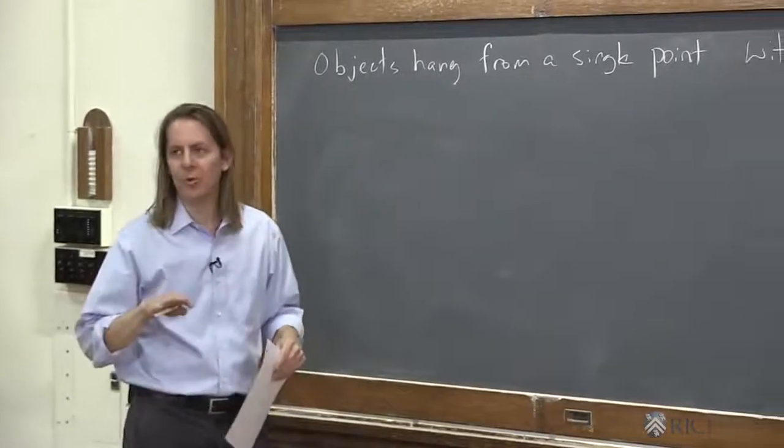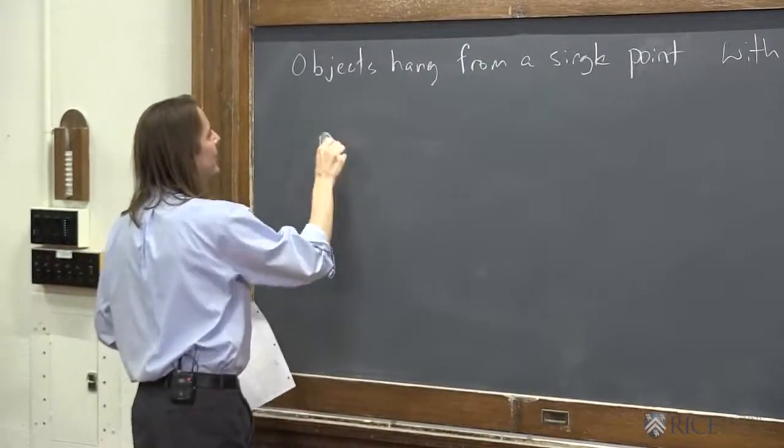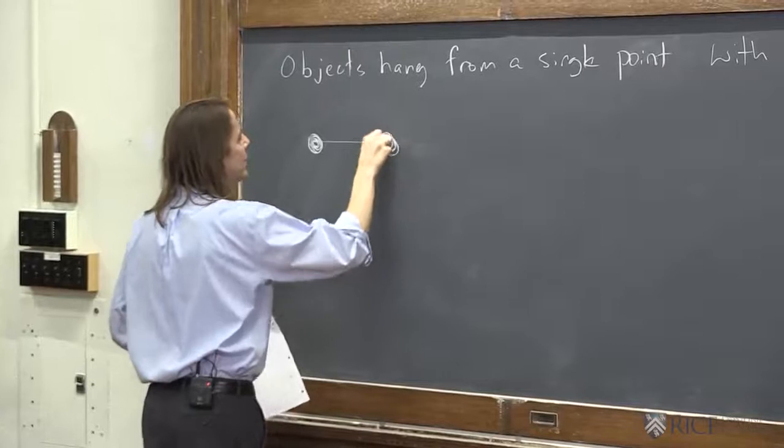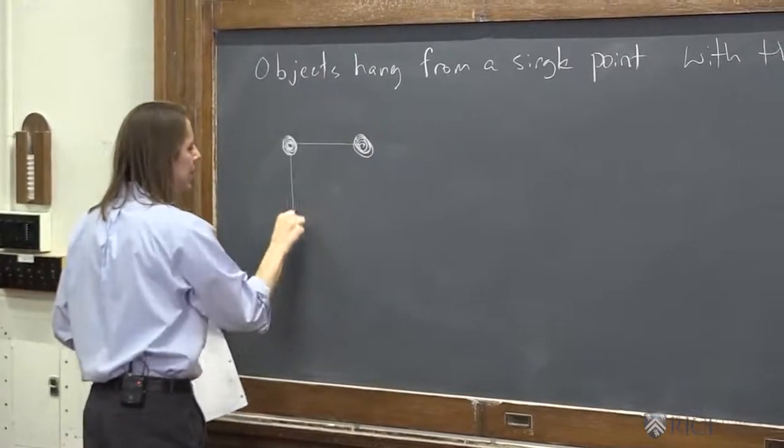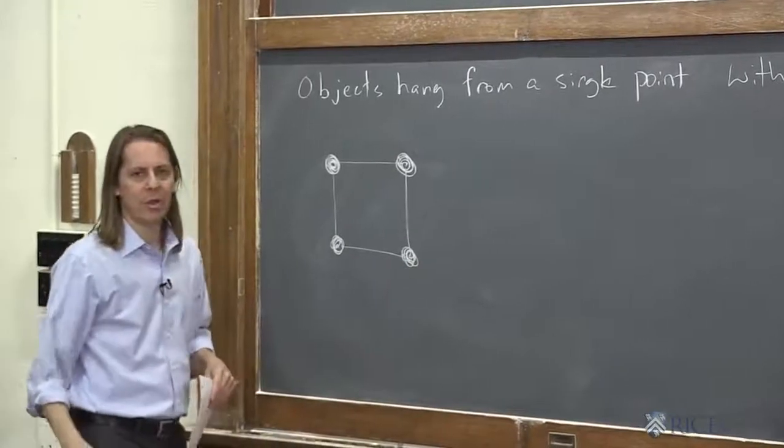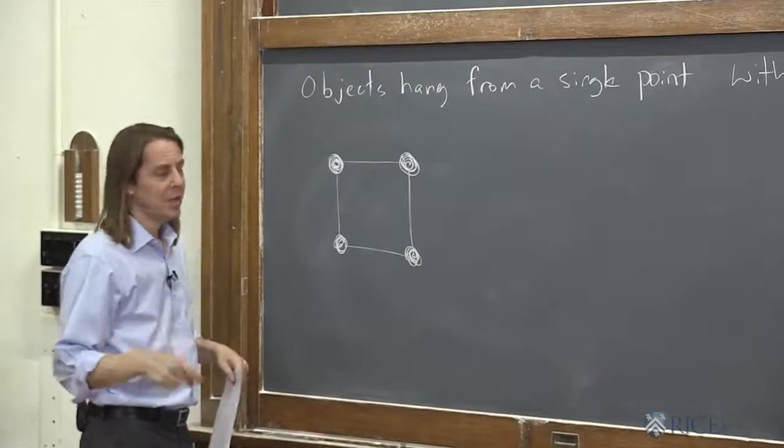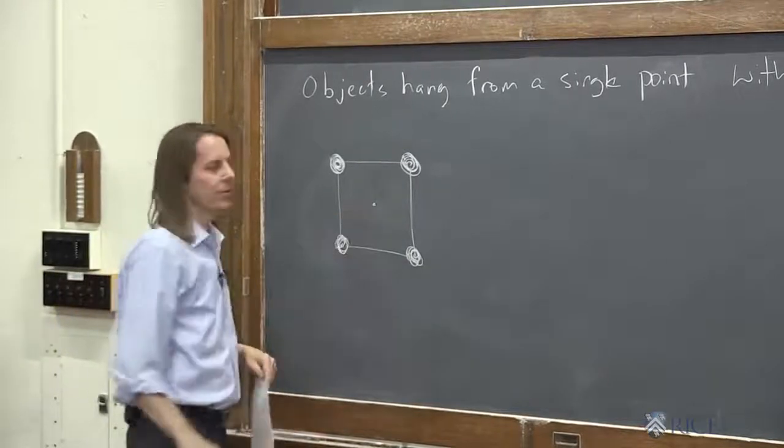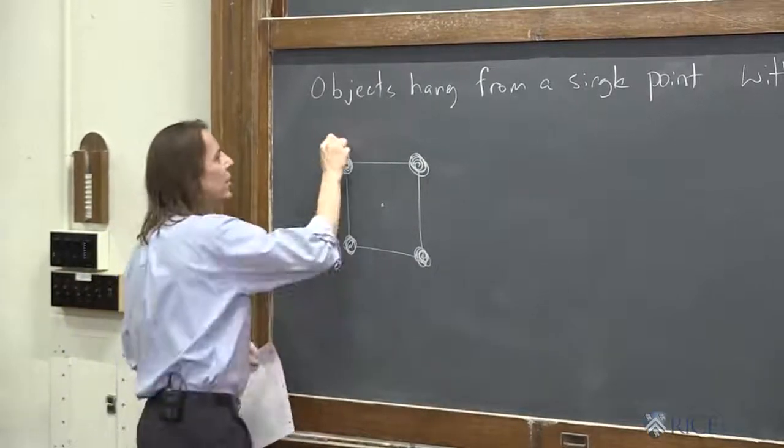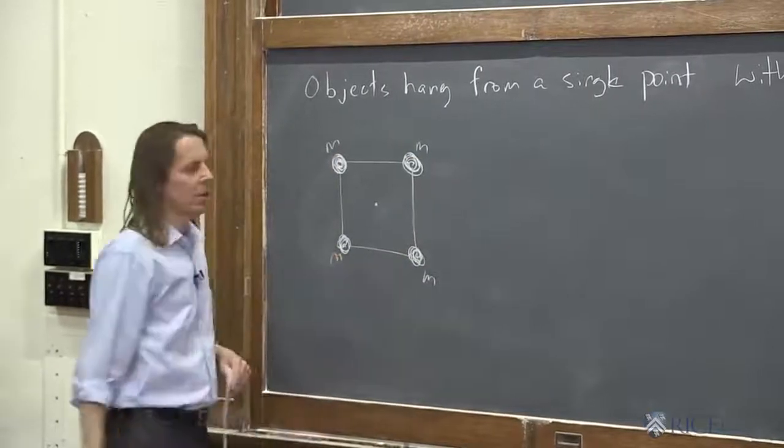But let's not do those forceps. Let's find something simpler. Let's start with four masses connected by light rods in a square, because that's an ideal object to start with, and we know where the center of mass is by symmetry and intuition. We know that the center of mass is there. If these all have the same mass and it's a square, that's where it would be.